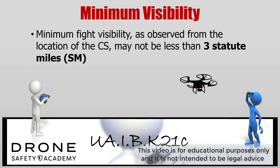Another operational requirement is the minimum flight visibility. The minimum flight visibility, as observed from the location of the control station, may not be less than 3 statute miles. Remember that statute miles is used for visibility, and nautical miles is used for measuring distance.